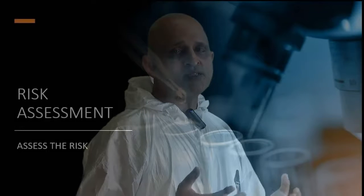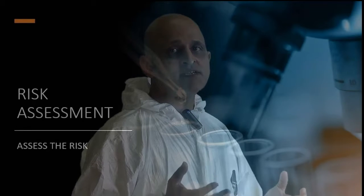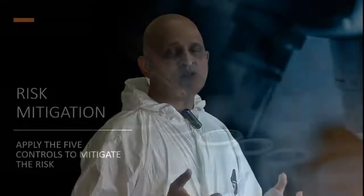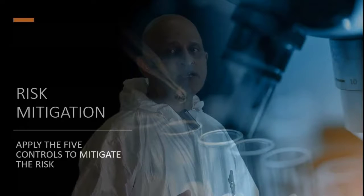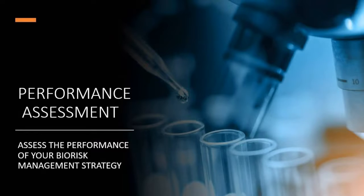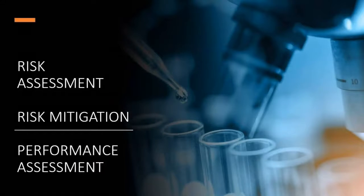We always commence biological safety management with a risk assessment. Following a risk assessment, we put into place the appropriate controls to mitigate or reduce the risk posed by a biological agent. And finally, we assess the performance of the controls by auditing our performance. These three steps form the basis for bio-risk management: risk assessment, risk mitigation, and performance assessment. This is a cyclical process which is continuously improved in order to mitigate risk posed when working with biological agents.